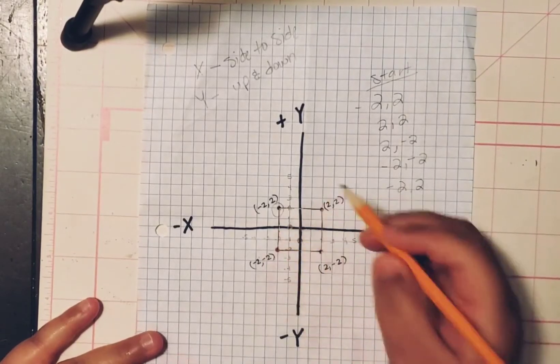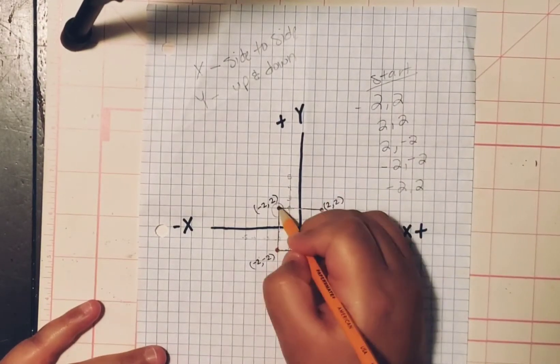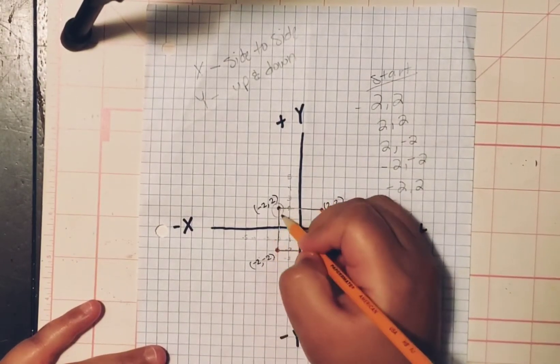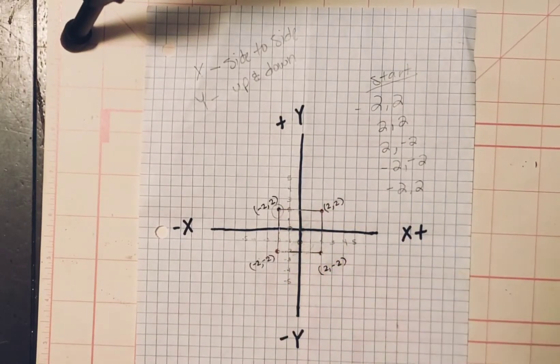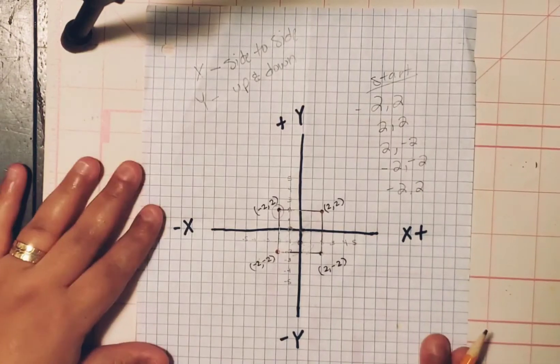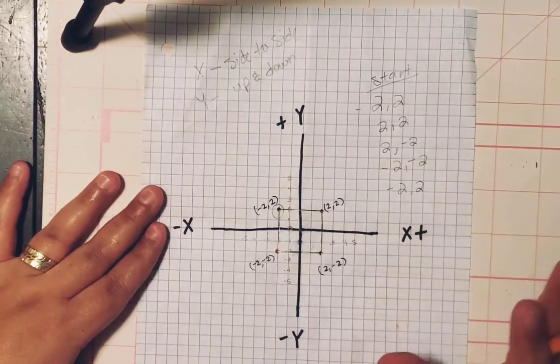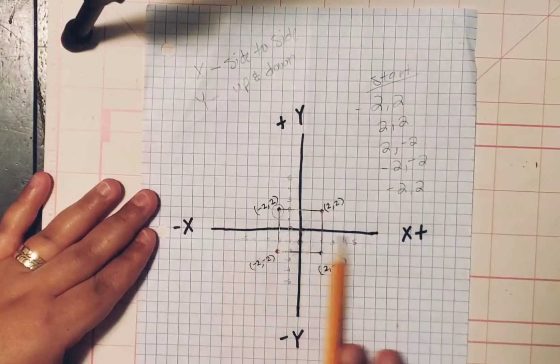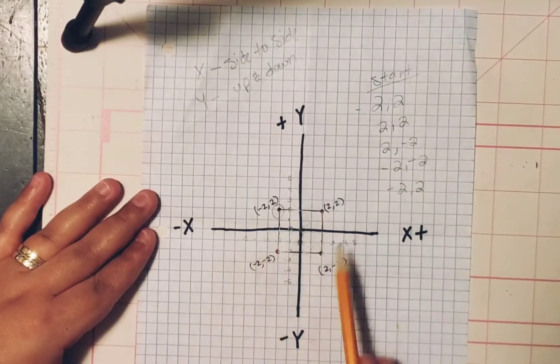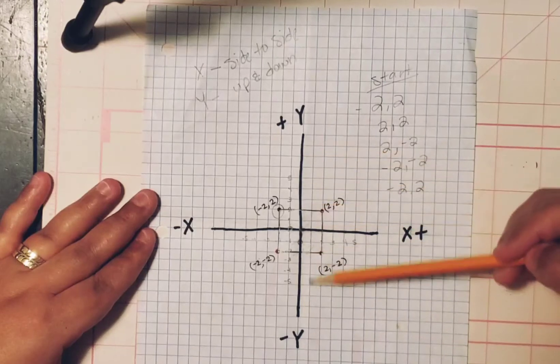That way you connect. Because this one can't just jump right there. So right there. And there is your three graph examples in how to start graphing. Always using your X line first, side to side. And then your Y up and down.